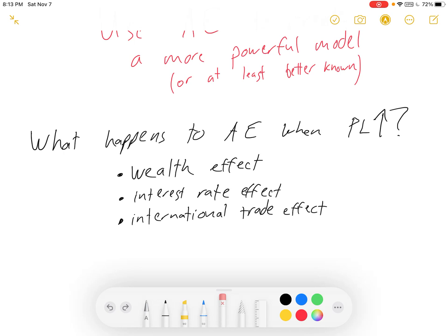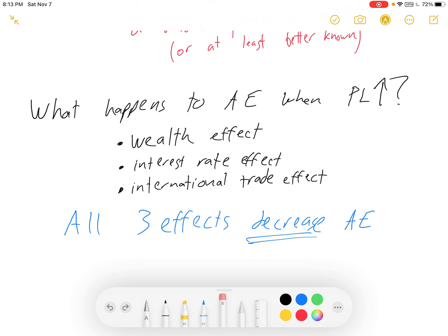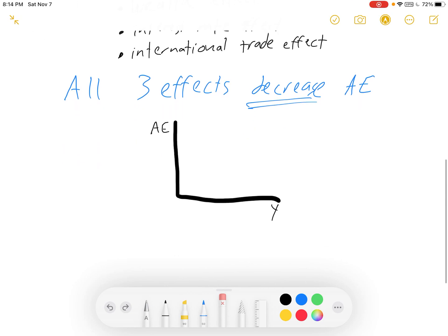So in three different ways, I just hit C, I, and net exports. When price level rises, aggregate expenditures are going to fall. So let's see if we can show what happens as price rises. All three of these decrease aggregate expenditures, so let's show it.